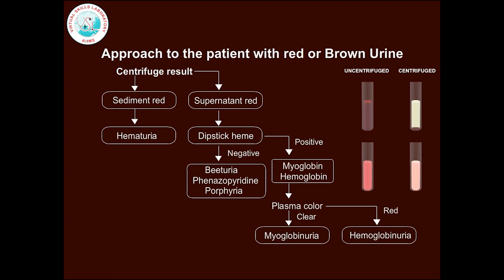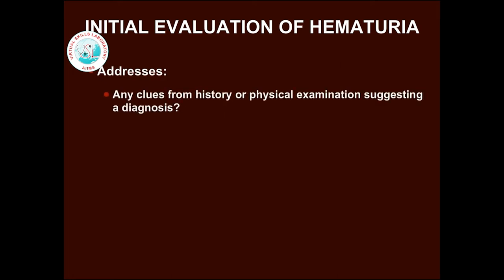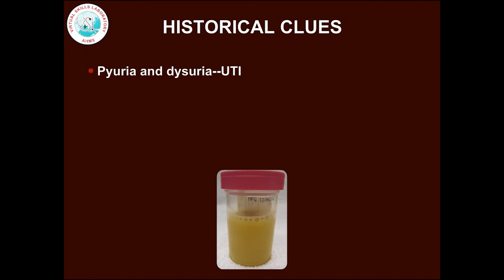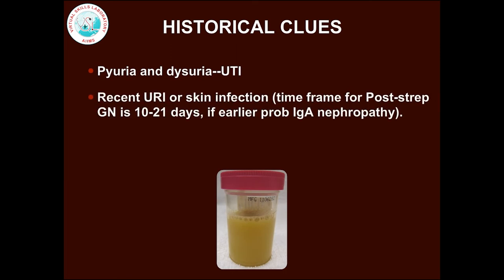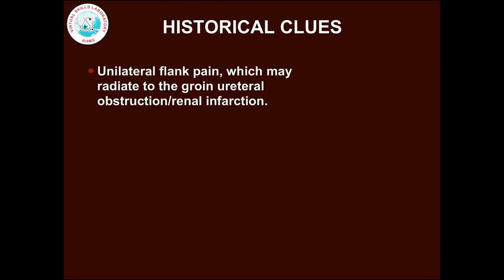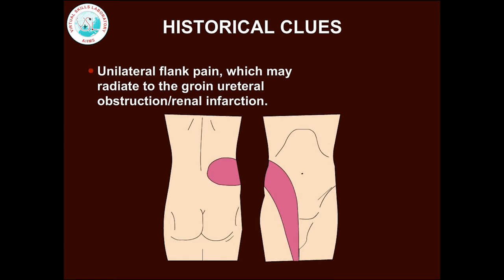Any amount of blood in urine should be taken seriously and investigated promptly. Initial evaluation of hematuria is now considered primary care. Key questions include: Are there clues from history or physical examination suggesting a diagnosis? Is the bleeding glomerular or extraglomerular? Is it transient or persistent? Presence of pyuria and dysuria points toward urinary tract infection. Recent URI or skin infection might suggest post-streptococcal glomerulonephritis or IgA nephropathy. Positive family history of renal failure may indicate hereditary nephritis or polycystic kidney disease. Unilateral flank pain radiating to the groin indicates ureteral obstruction due to blood clot or calculus, and can also be due to renal infarction.